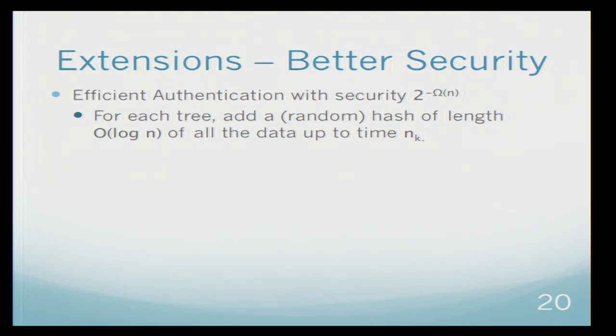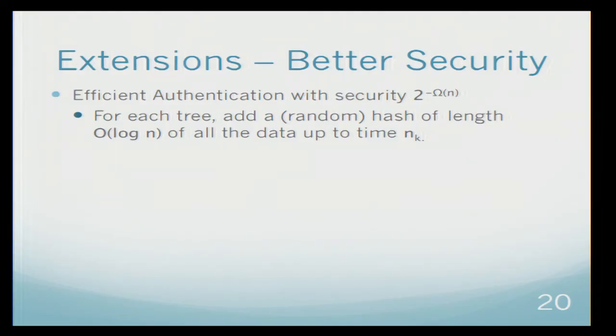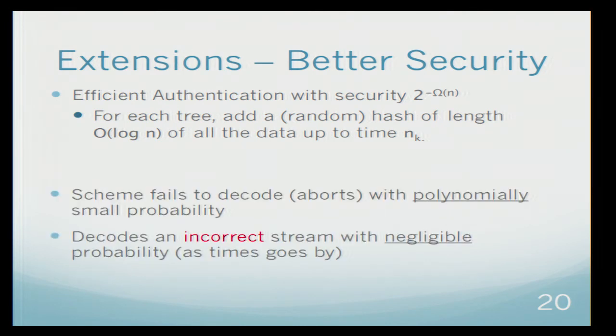As I mentioned in the theorem, maybe I should restate it, the probability of success of the efficient scheme is 1 minus 1 over polynomial. But we are capable to have some extension and to increase our authentication guarantee to be 2 to the minus n.